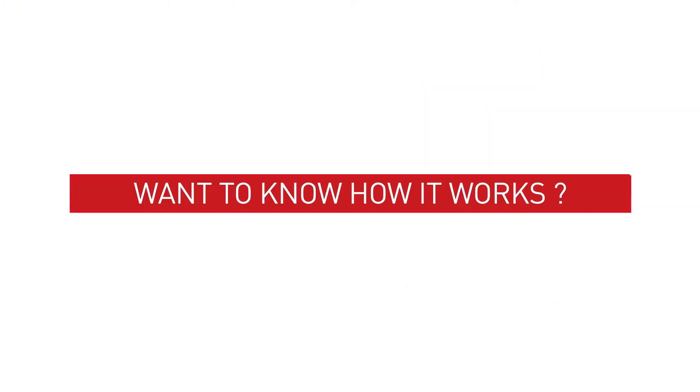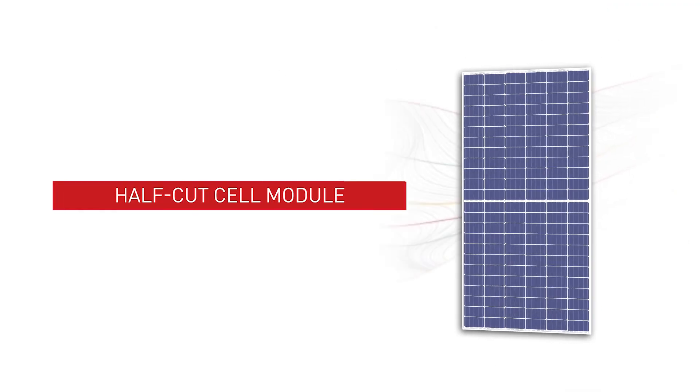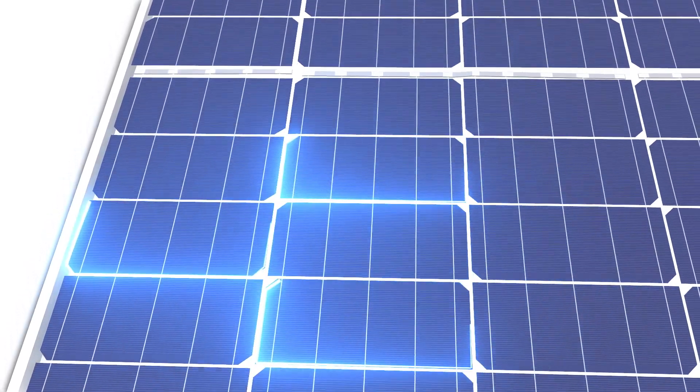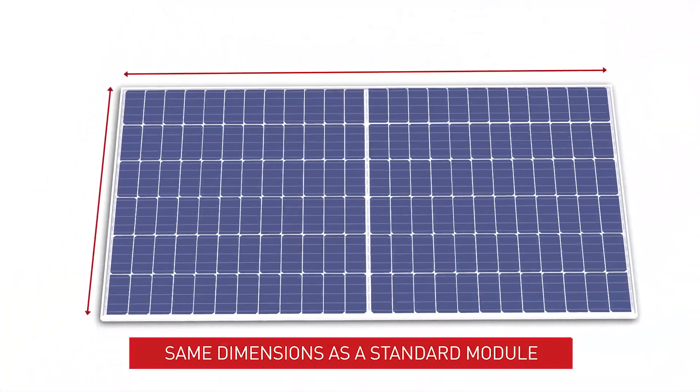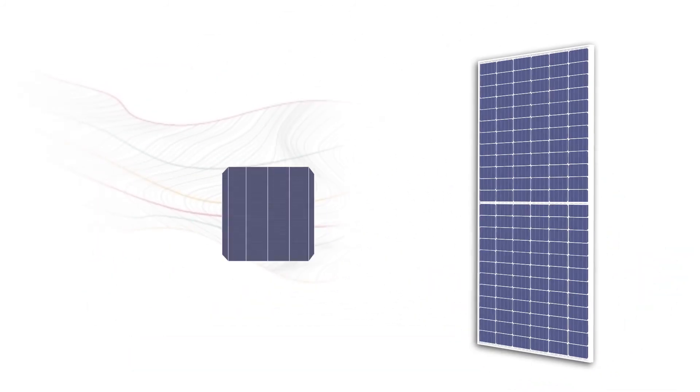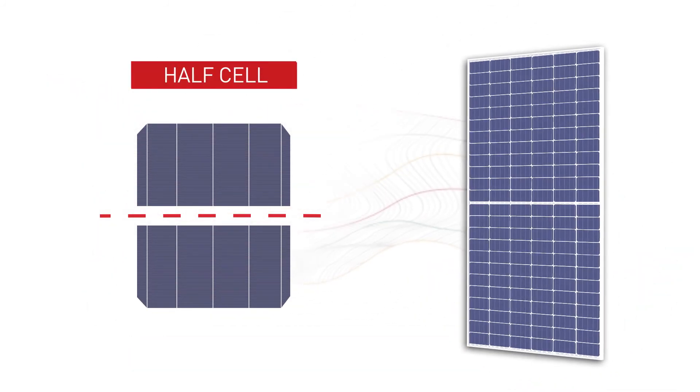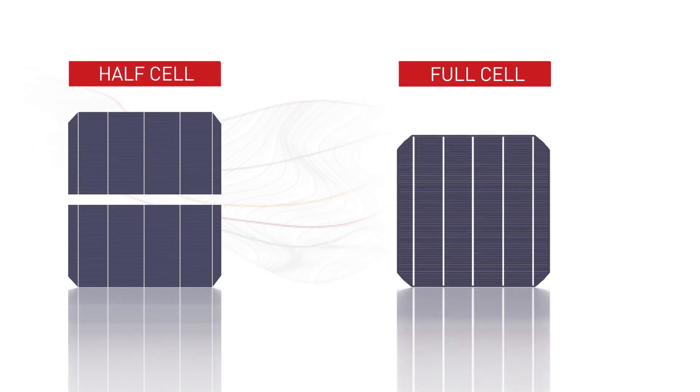Want to know how it works? A half-cut cell module consists of 144 half-cells instead of 72 cells, whilst keeping nearly the same dimensions as a standard module. The cells are cut into equal pieces known as half-cells, which reduce the internal resistance and increase the overall efficiency of the module.